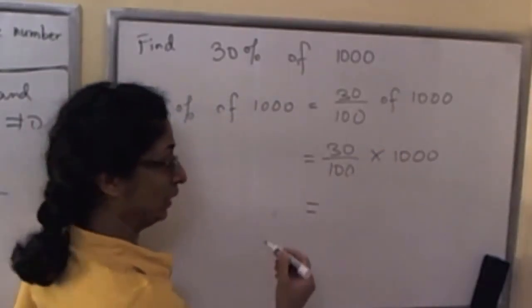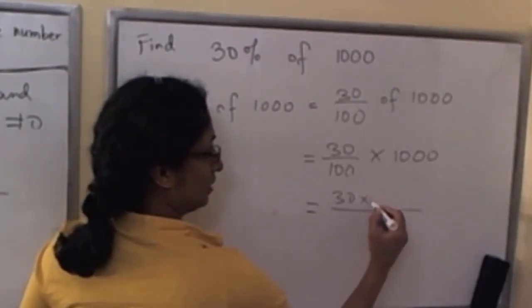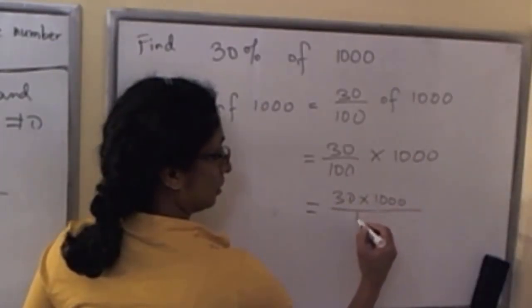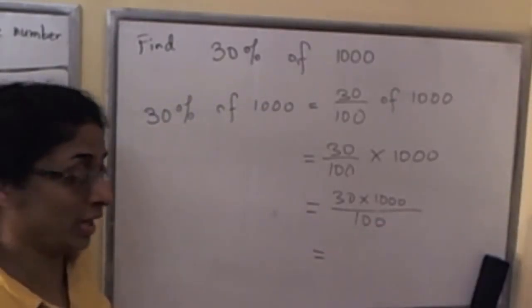And now we also just reviewed that this is simply the same as 30 times 1000 over 100. And now you can use the cancellation law of fractions.